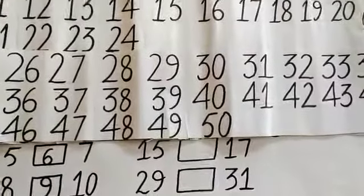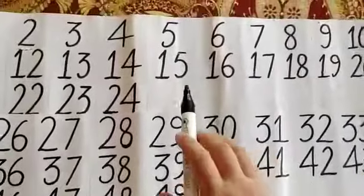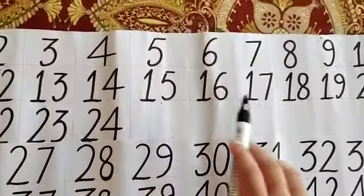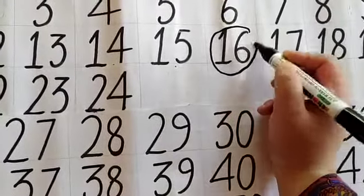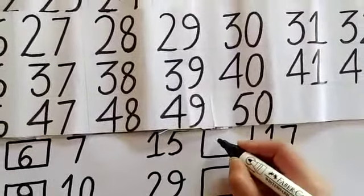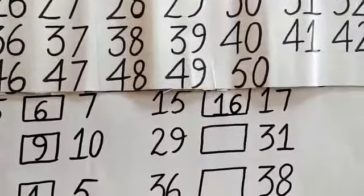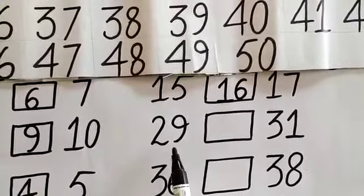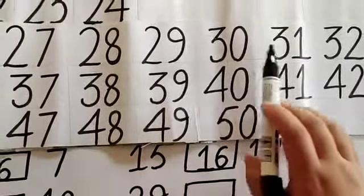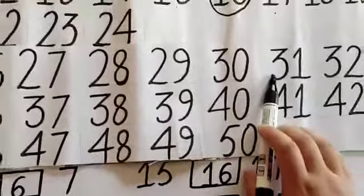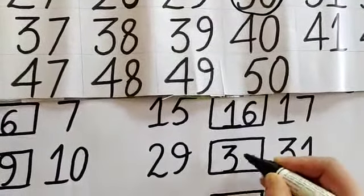Now kids, can you tell me which number will come in between 15 and 17? Look here — 15 and 17, which number is in the middle? Number 16. So number 16 will come in between 15 and 17. Now tell me which number will come in between 29 and 31. In between means in the middle. The answer is 30. So I will write 30 here.